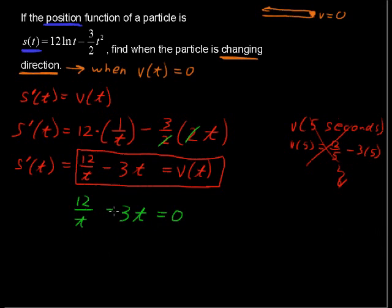Real quickly, a little algebra here. I'll multiply everything by t, and I get 12 minus 3t squared equals 0. I'm going to subtract 12 and divide by negative 3, so I'll get t squared equals 4.